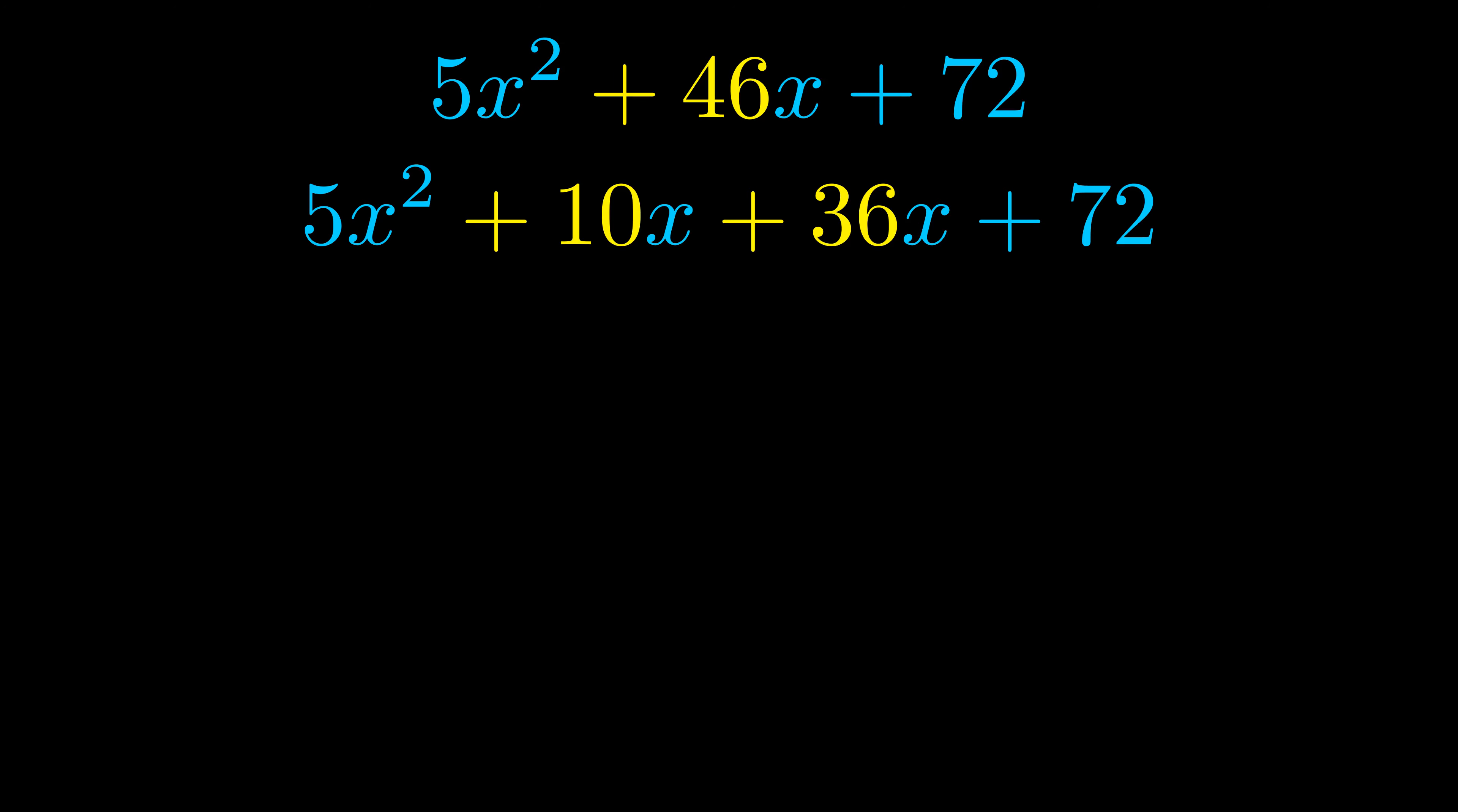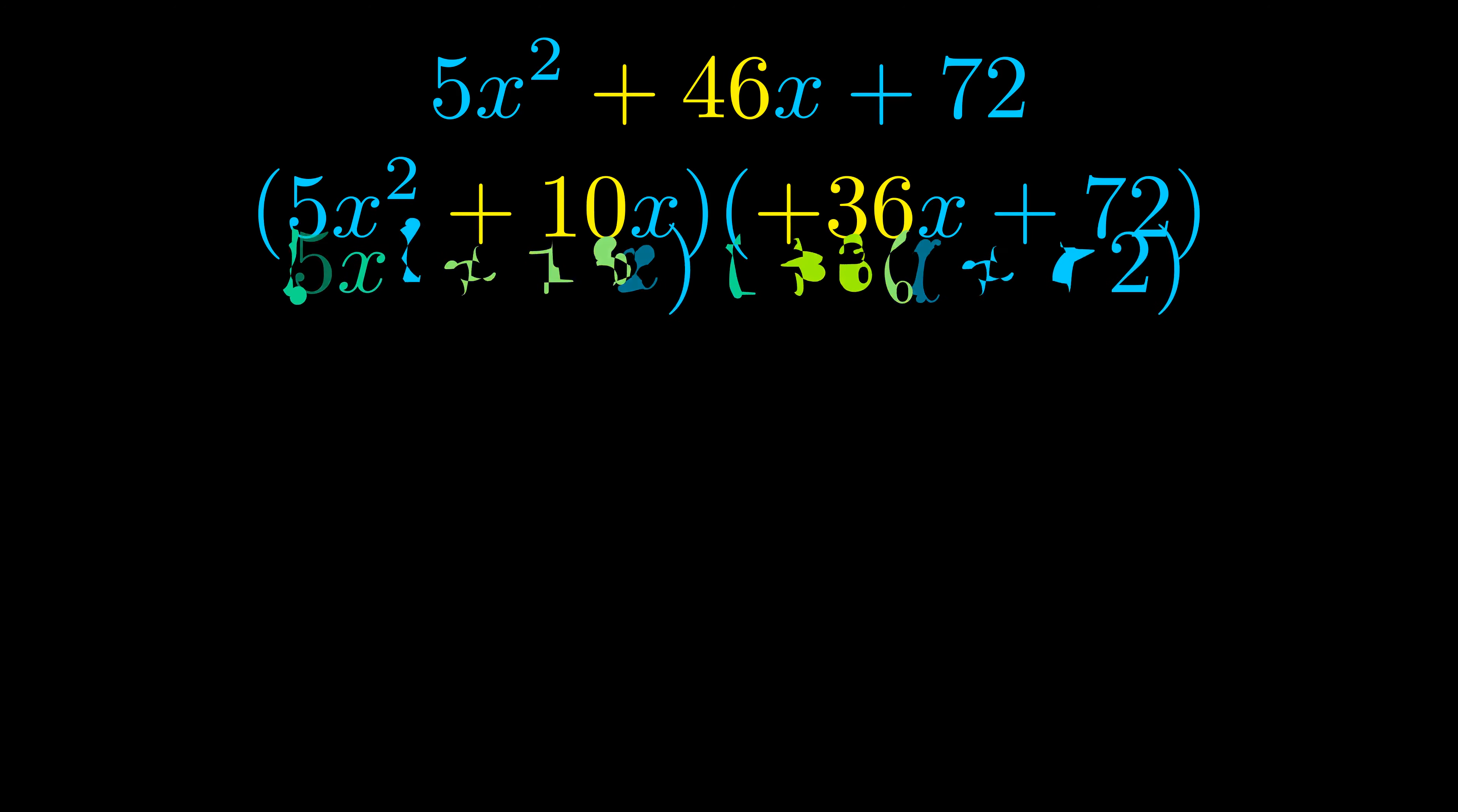Once we've done this we go ahead and we put parentheses around the first term in the last term and we do that so that we can take the greatest common factor out of both terms. We can see the greatest common factor is now outside in green. Notice also how what remains inside of the parentheses is the same in both cases. The blue values are the same.